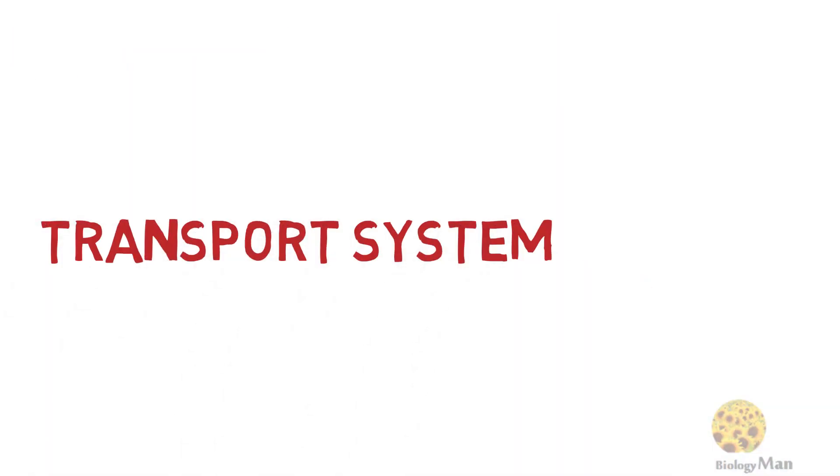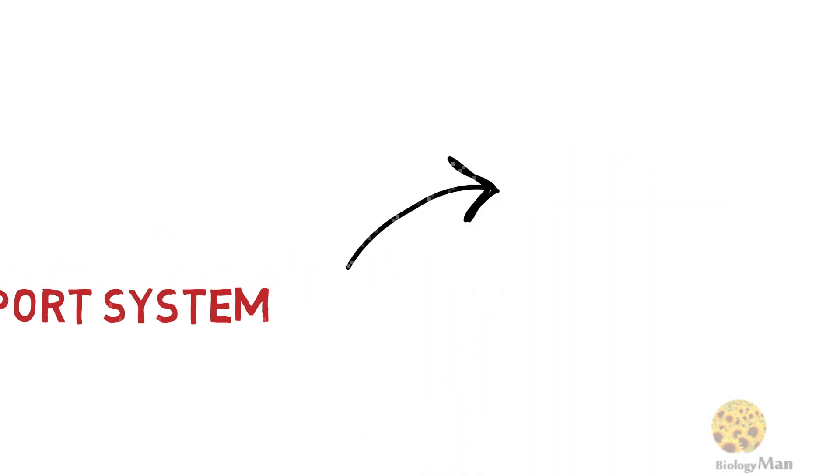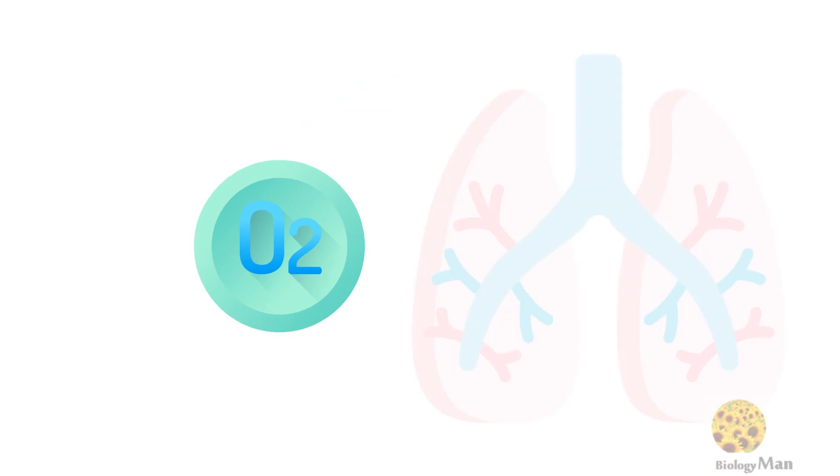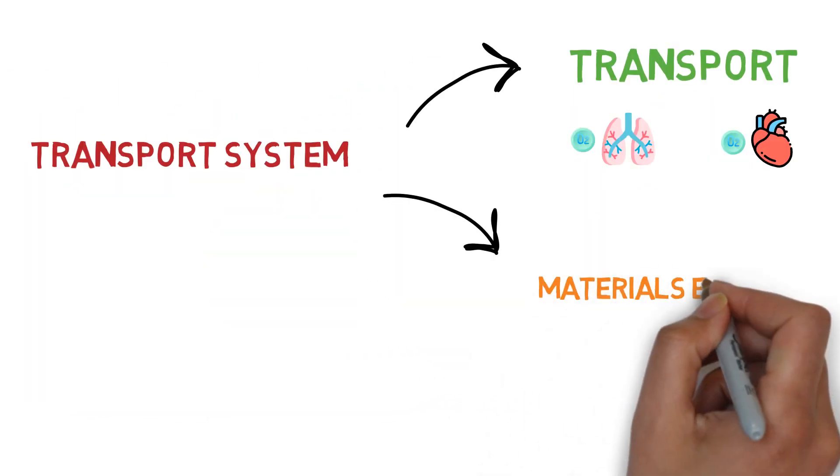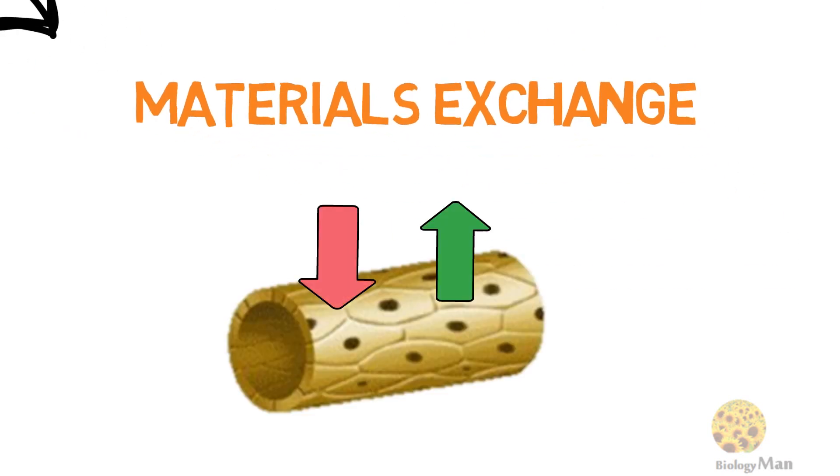The transport system in humans mainly serves two functions. First, transport: it carries blood and substances from organ to organ. Second, material exchange: which allows substances to go in or out of the blood circulatory system at some points.